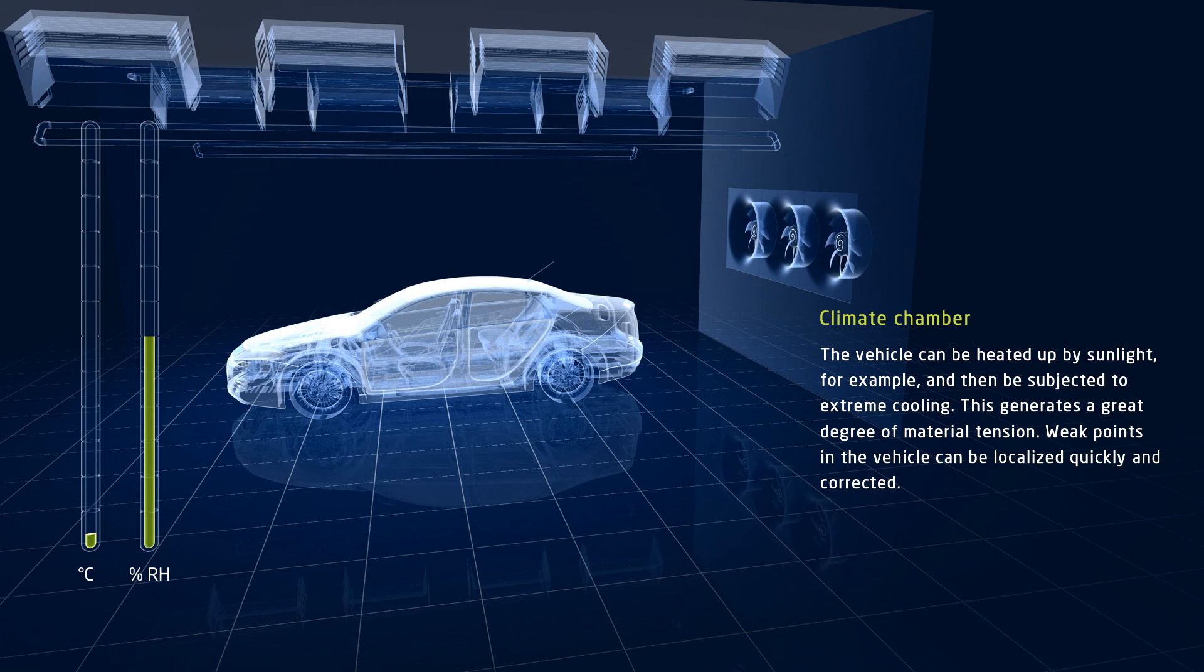The car can be heated up by sunlight, for example, and then be subjected to extreme cooling. This generates high material tension. The tests in the climate chamber can be used to locate weak points in the vehicle quickly and correct them.